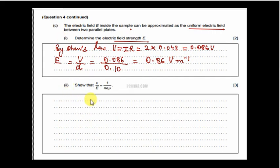In the last part they say show that V upon E is equal to 1 upon n e rho. Here V is not the electric potential, it's the drift velocity. Now we use the formula that V, the electric potential difference by Ohm's law, is equal to IR.